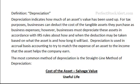Amortization is basically the same thing, only it applies to intangible assets. Businesses can deduct the cost of the tangible assets they purchase as a business expense. However, businesses must depreciate these assets in accordance with IRS rules on how and when the deductions may be taken, based on what the asset is and how long it will last. The most common method is the straight-line method: cost of assets minus the salvage value, divided by the useful life — the number of years you expect that asset to benefit the company.